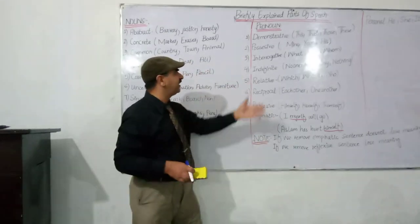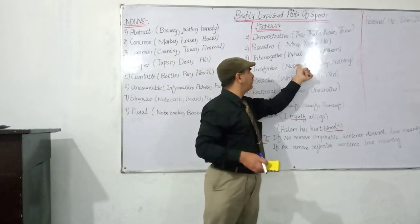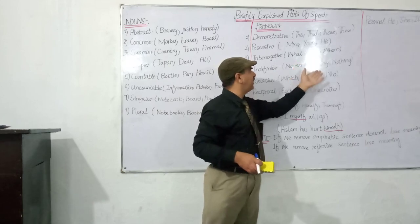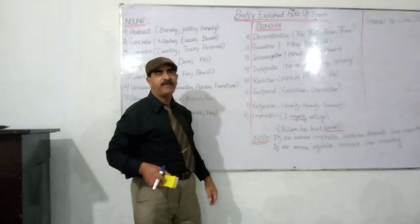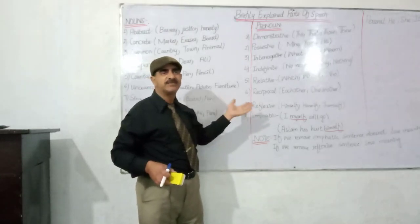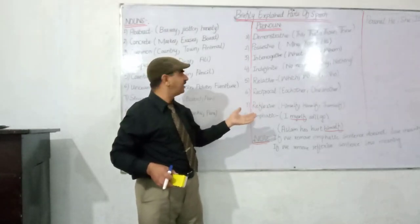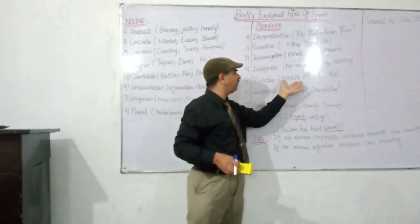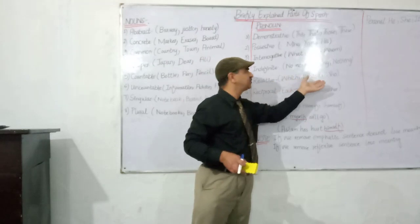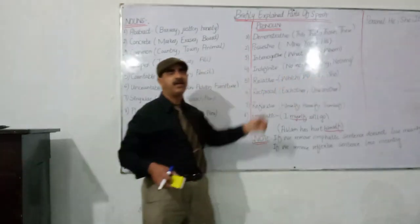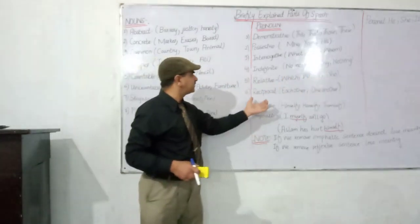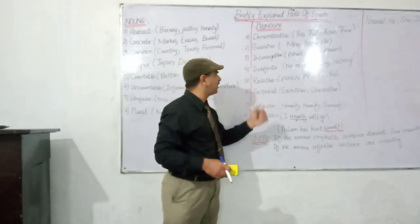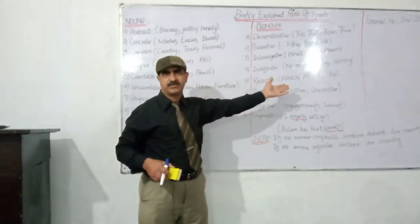Next are indefinite pronouns — none, anything, nothing. There are many more examples of these. Next are relative pronouns — which, whose, who, whom. They come in the middle of the sentence and define the noun before them.